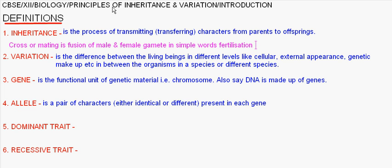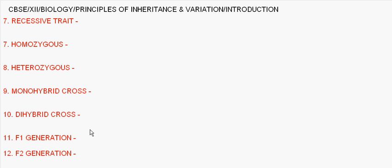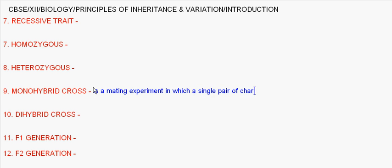Monohybrid cross is a mating experiment in which a single pair of characters is used to determine how genes are transferred — to determine the role of inheritance.